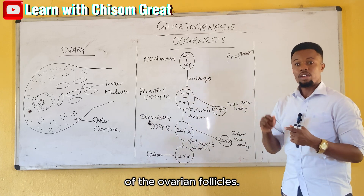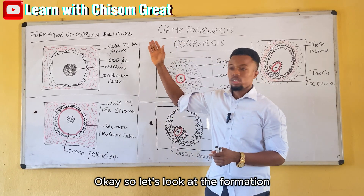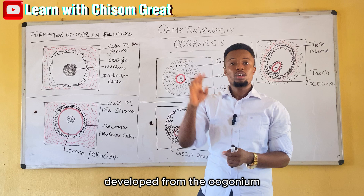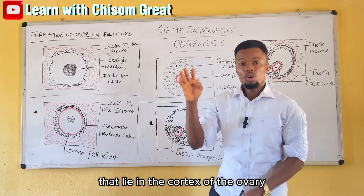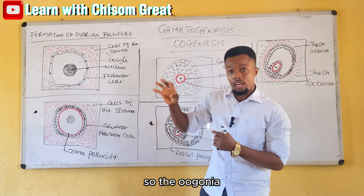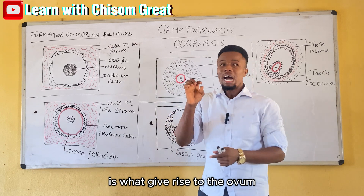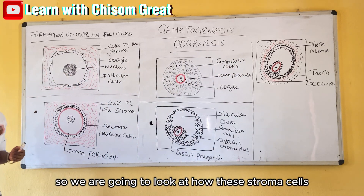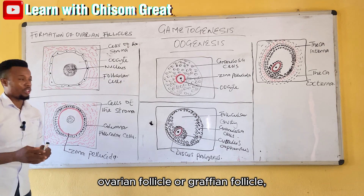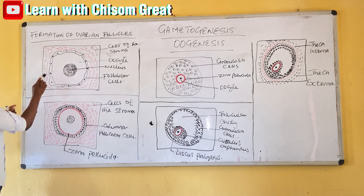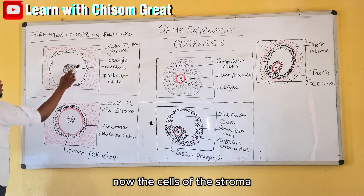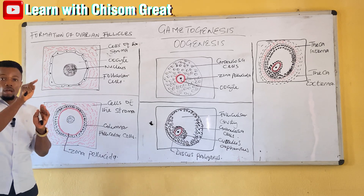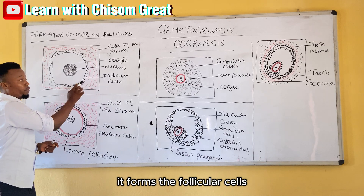We will now look at the formation of the ovarian follicle. The ovum develops from the oogonia that lie in the cortex of the ovary, and these oogonia are surrounded by some stroma cells. The cells of the stroma become flattened and surround the oocyte — at that stage they form the follicle cells.